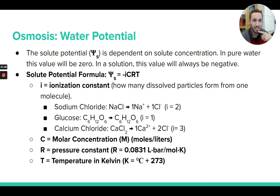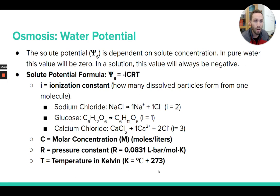C is the molar concentration of the solution — whatever the molarity is, plug that in for C. R is a pressure constant — always 0.0831 — given on your formula sheet. T is temperature, but be careful: you must plug in Kelvin, not degrees Celsius. To convert, take degrees Celsius and add 273. Students commonly forget this and plug in Celsius, which is wrong.